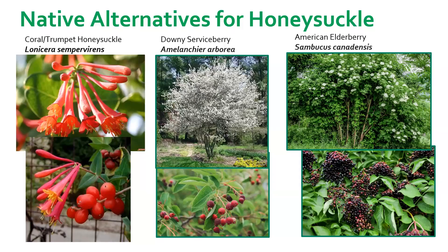Native honeysuckle alternatives include the trumpet or coral honeysuckle. Other great alternatives are downy serviceberry and American elderberry, both of which have medicinal purposes and support wildlife. The serviceberry shrubs bloom early in the spring, making them an essential early-season food source for pollinators. American elderberry has pollen-heavy flowers that attract a variety of pollinators, and their leaves provide food for many moth larvae, including the pretty Cecropia moth, which you can see pictured here.